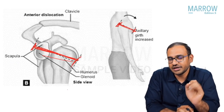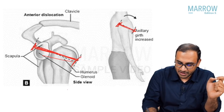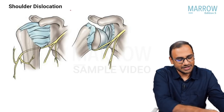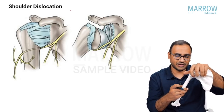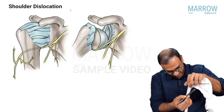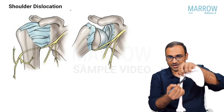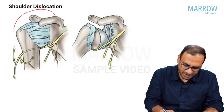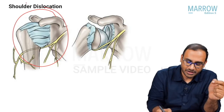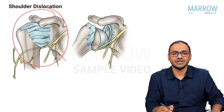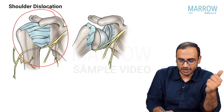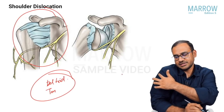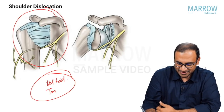One very important thing to assess at presentation is the function of the nerve most likely to get injured in shoulder dislocation — the axillary nerve. The axillary nerve runs in very close proximity to the shoulder joint, so whenever there is a shoulder dislocation, the axillary nerve is very likely to get injured. Motorically, it supplies the deltoid and teres minor. Sensory supply is to the regimental badge area — the lateral aspect of the upper arm.